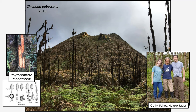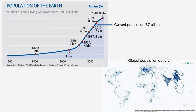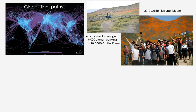Before talking about specific projects, I want to step back and remind us how we got to this point. We've been in a period of exponential population growth since at least the 1960s. We now have 7.7 billion people on Earth and are projected to have 9 billion by 2050. Given the increasing population and acceleration of technology, we're moving around the world like never before.